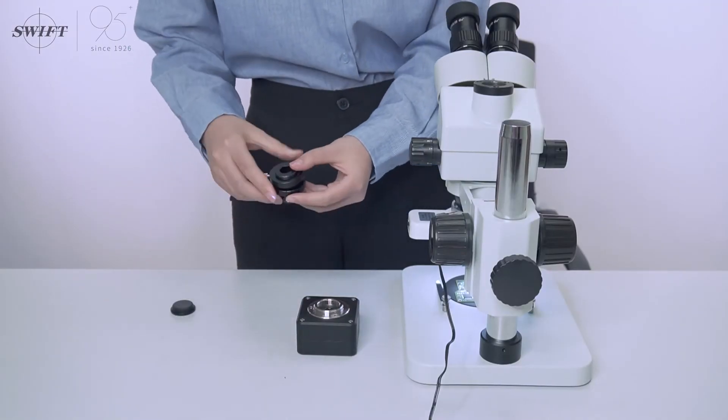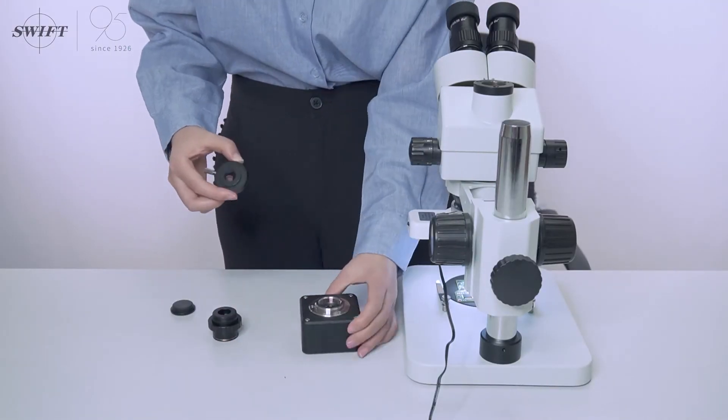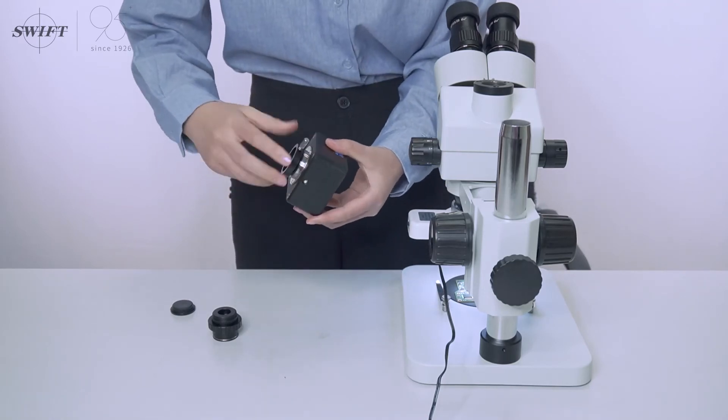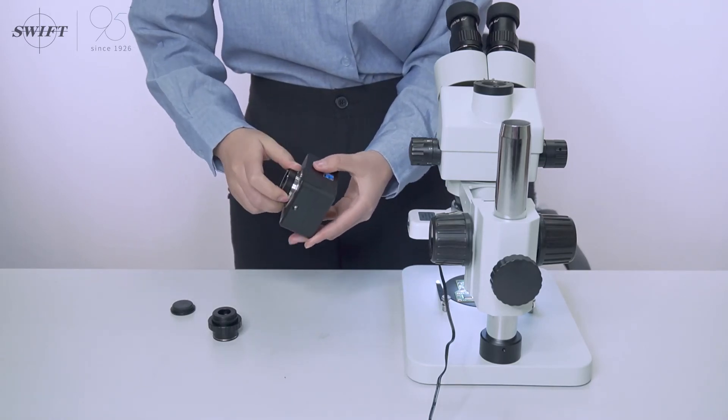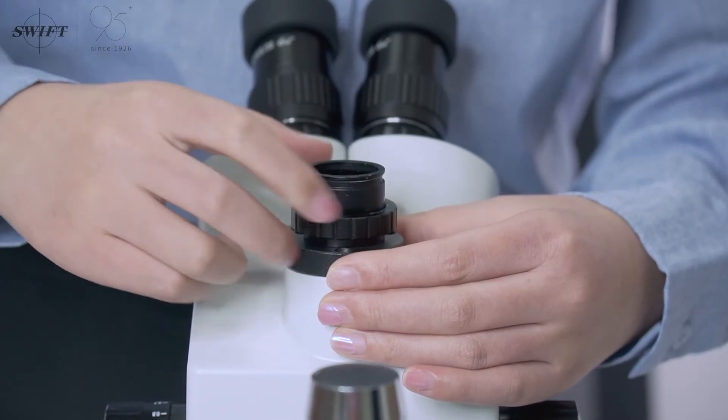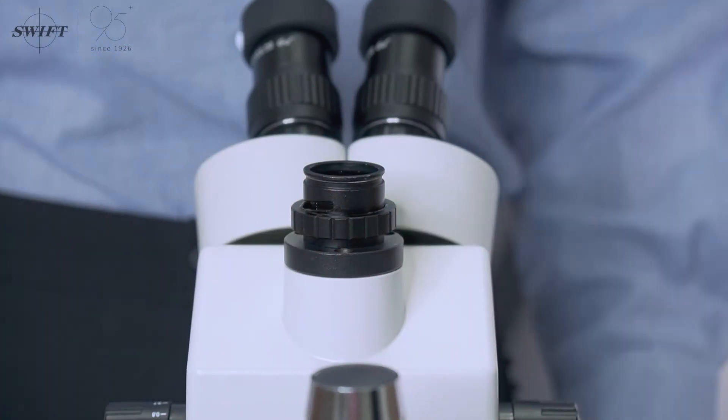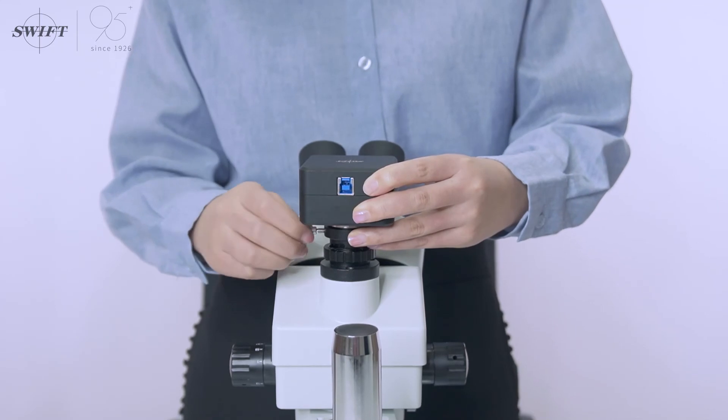Connect the connecting ring to the digital camera. Connect the connecting ring to the trinocular interface of the stereo microscope. Connect the camera to the trinocular connector.